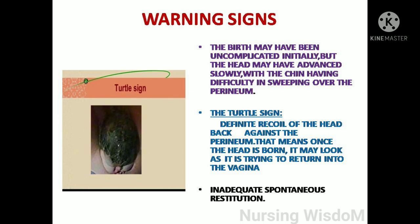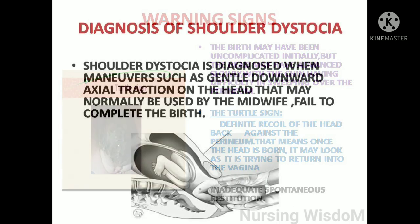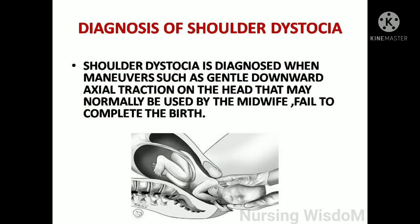Warning signs include: the head may advance slowly with the chin having difficulty sweeping over the perineum; the turtle sign — definite recoil of the head back against the perineum, where once the head is born it may look as if it is trying to return into the vagina; and inadequate spontaneous restitution.